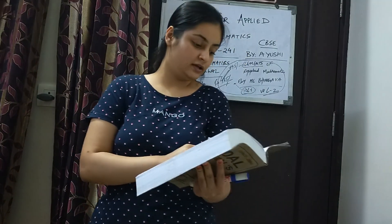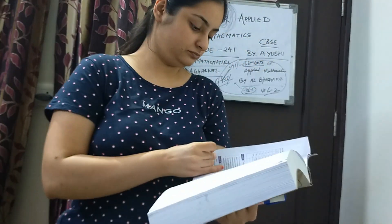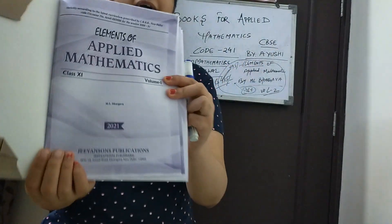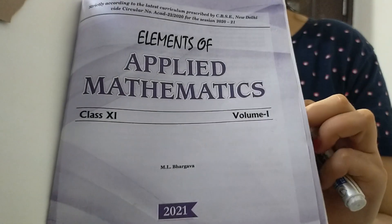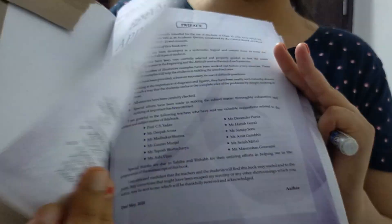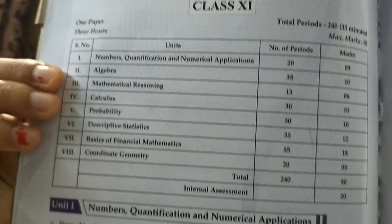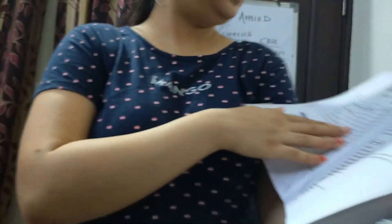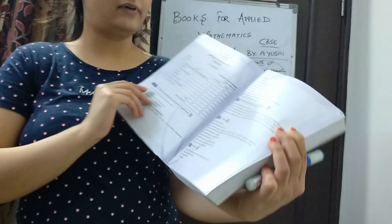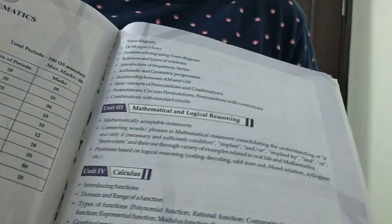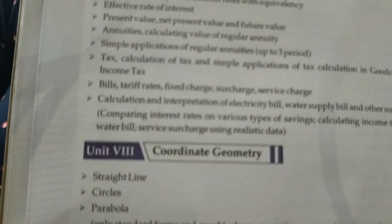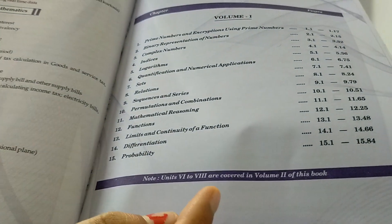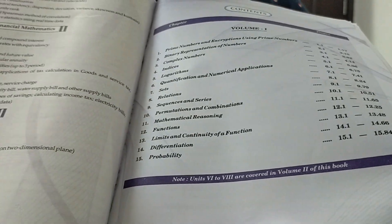This is the book — Elements of Applied Mathematics. This is volume one. Half the syllabus is covered in this book and the other half will be covered in the next volume. The unit-wise total syllabus is also given on the outside of the book. The syllabus covered in volume one goes up till probability.